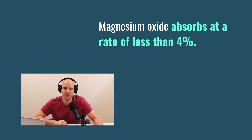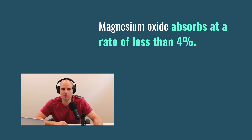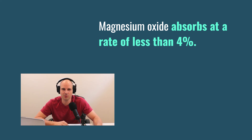Most magnesium glycinate or bisglycinate products are actually buffered with magnesium oxide, although they don't tell you that — meaning it's the two of them mixed. The reason they do that is to lower the price and increase the elemental magnesium by adding oxide into it without mentioning it. The problem is it still causes diarrhea.